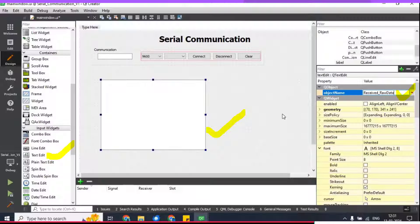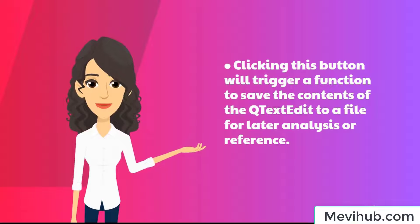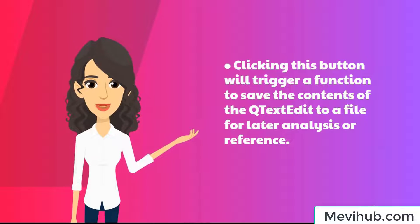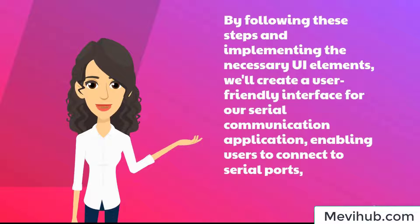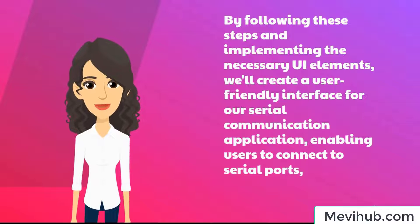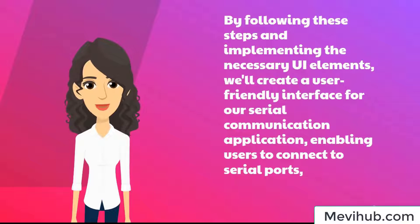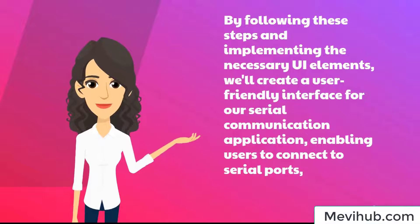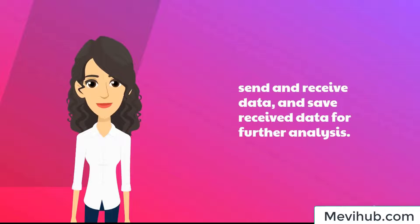Step 8: QPushButton for Save Button. Finally, we'll add a QPushButton widget labeled 'Save' to allow users to save the received data to a file. Clicking this button will trigger a function to save the contents of the QTextEdit to a file for later analysis or reference. By following these steps and implementing the necessary UI elements, we'll create a user-friendly interface for our serial communication application, enabling users to connect to serial ports, send and receive data, and save received data for further analysis.